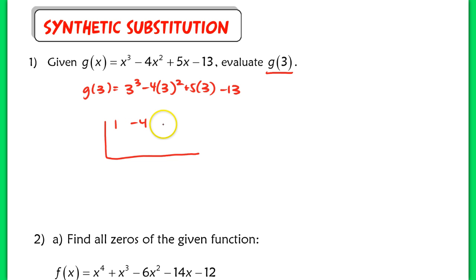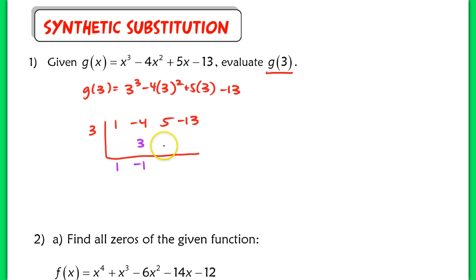Instead of using direct substitution, we can use something called synthetic substitution, which looks exactly like synthetic division. So I'm just going to set it up real quick. We're using the coefficients of our polynomial and placing the 3 on the outside of that bar. We complete this process like we typically would with synthetic division: drop the 1, multiply 3 times 1, add, multiply 3 times negative 1, add the terms together, multiply 3 times 2, get 6.